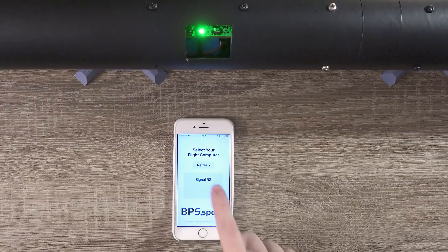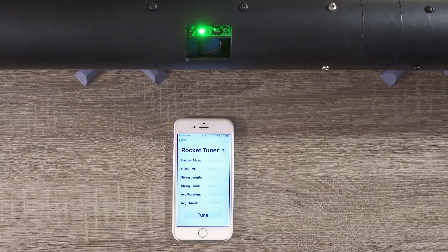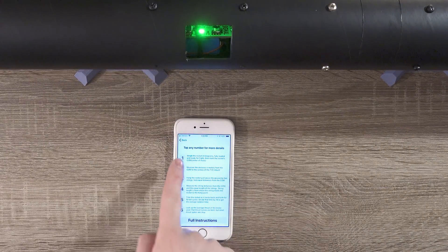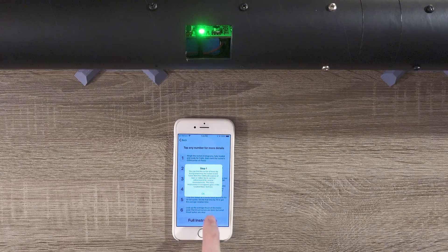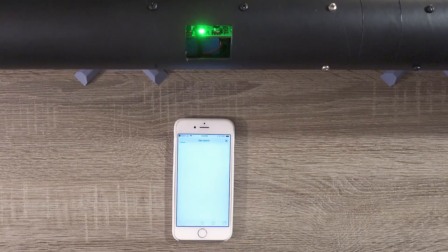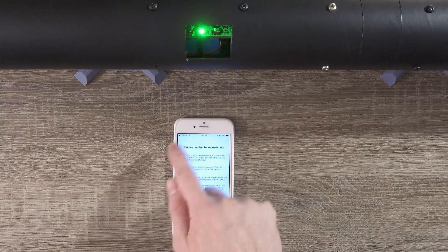Connect with the flight computer and then head into the tuning section. If you need help at any point, you can tap the question mark in the top right. This page gives step-by-step instructions of how to tune the rocket if you forget. You can also tap the full instructions button, which will send you to the BPS website for more details.